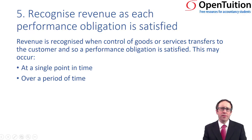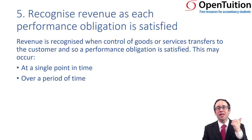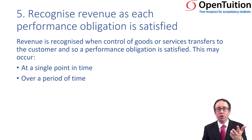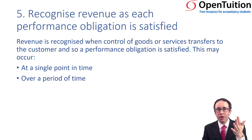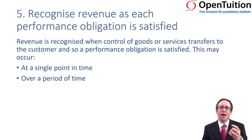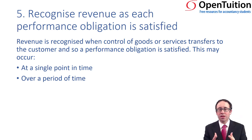So, the final piece within the jigsaw — step number five. Remember, step number one was to identify the contract, step number two was to look at the performance obligations, step number three was to look at the transaction price, step number four was to allocate the transaction price across the separate performance obligations. And now we get to the crunch, the nitty gritty — recognising the debits and the credits as we look at recognising the revenue within the financial statements.